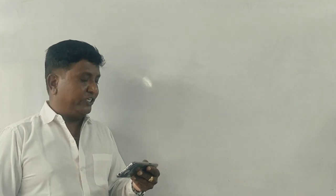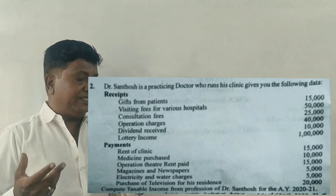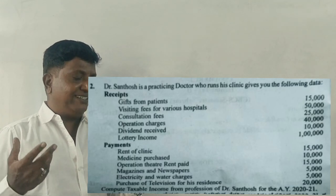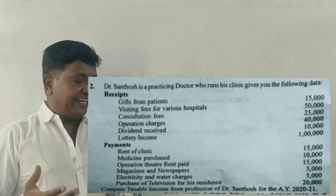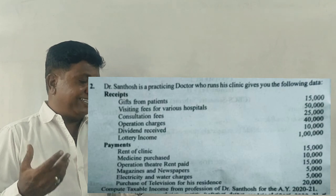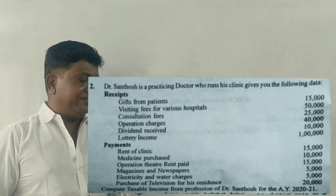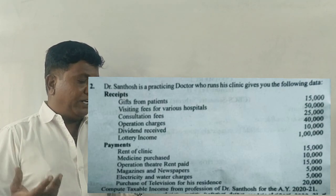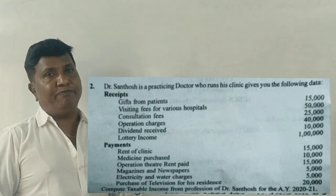Literally, six marks here — income from professional. One question came correct. Dr. Santosh is a practicing doctor who runs his clinic and gives the following data: gift from patient, visiting fee for various hospitals, consultation fee, operation charges, dividends received, lottery income.